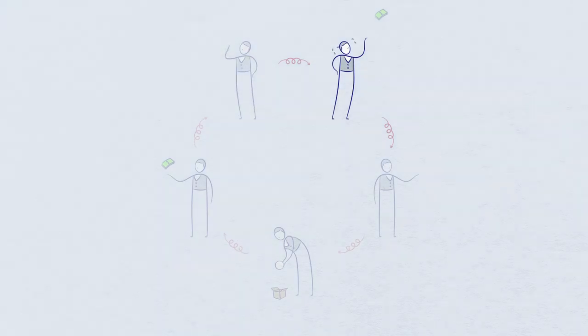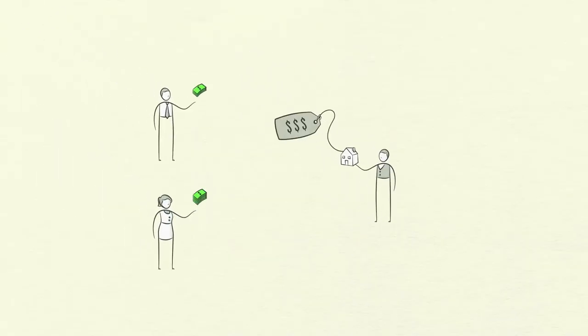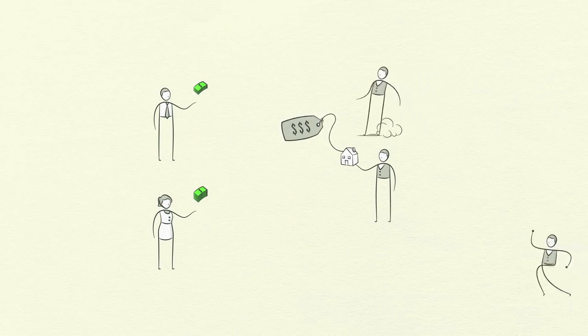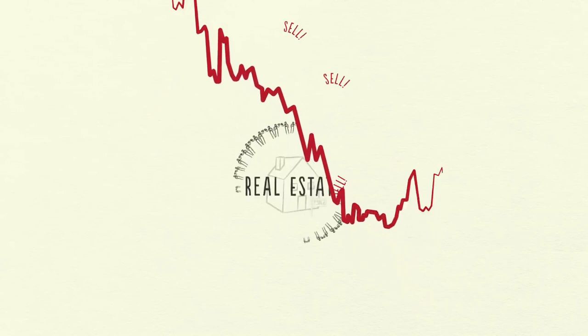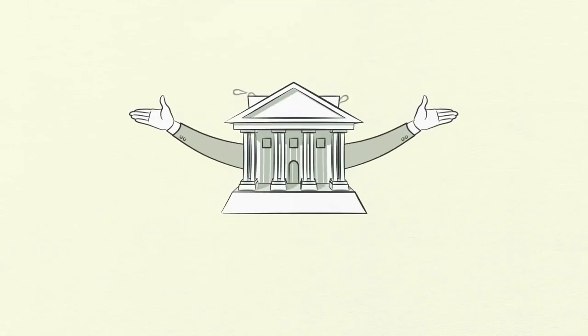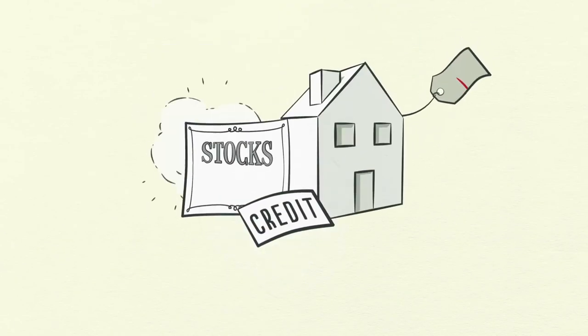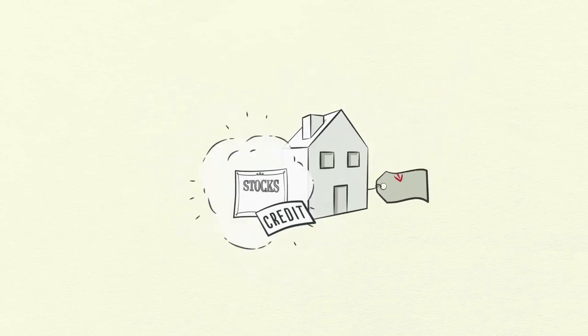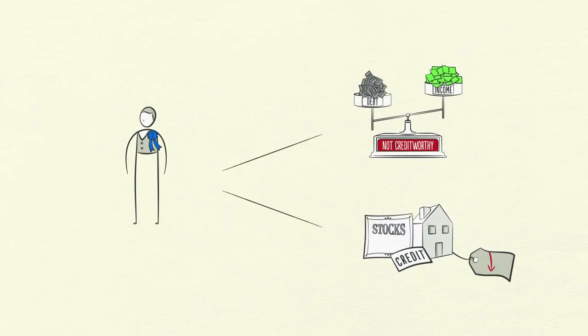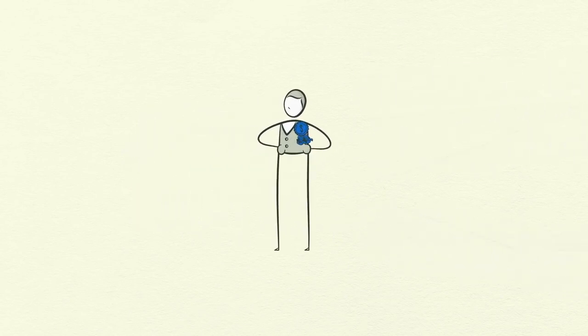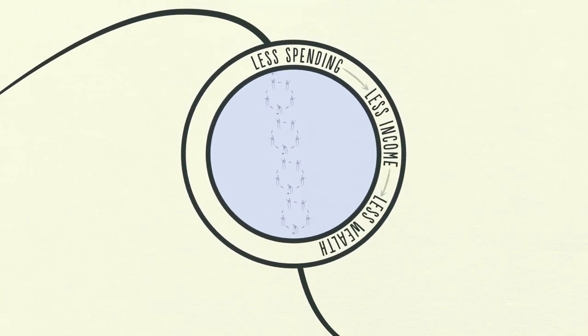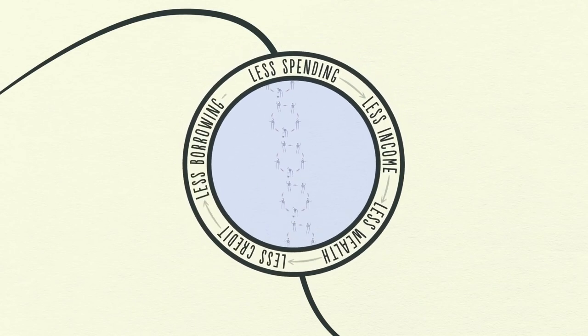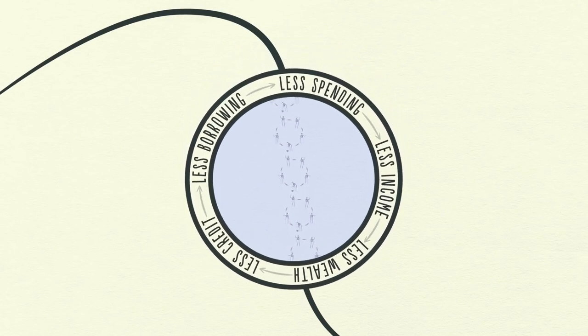Scrambling to fill this hole, borrowers are forced to sell assets. The rush to sell assets floods the market at the same time as spending falls. This is when the stock market collapses, the real estate market tanks, and banks get into trouble. As asset prices drop, the value of the collateral borrowers can put up drops. This makes borrowers even less creditworthy. People feel poor. Credit rapidly disappears. Less spending, less income, less wealth, less credit, less borrowing, and so on. It's a vicious cycle.